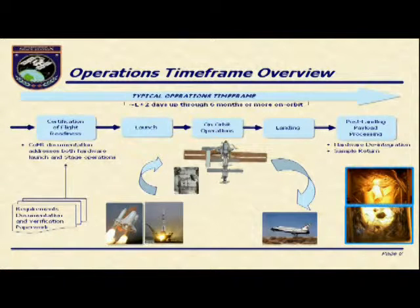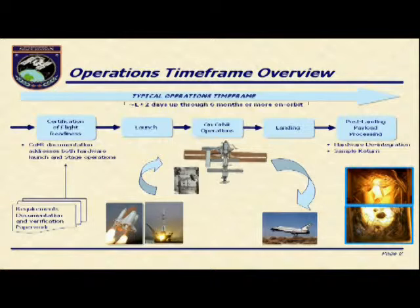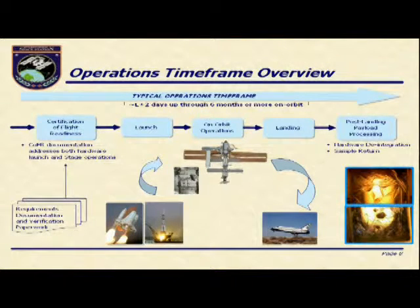After we've integrated you, gotten all our data, everybody's ready, the vehicle has launched, and your hardware and crew are on orbit, we go into the operations phase. First, before we launch you, we have to certify that we've done all the things needed to make sure your payload is safe, the vehicle is safe, and the crew is safe — our certification of flight readiness. Then there's launch, on-orbit operations, landing, and post-landing. We help with post-landing payload processing, returning your hardware and any samples, including baseline data collection post-flight if required.